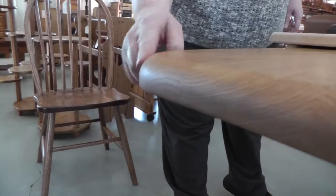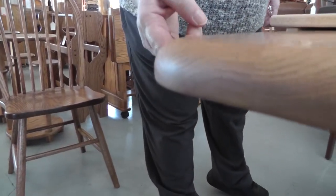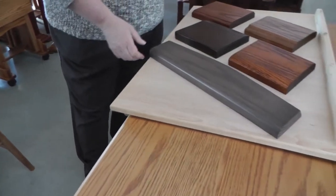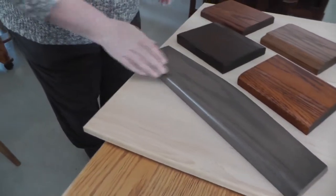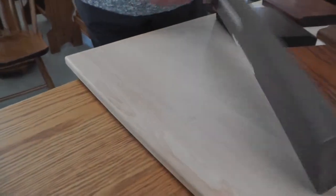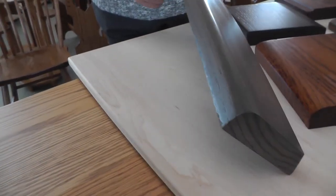This one is the round over. There are about ten different edges available and we have some of them displayed here. This one is the half inch round over.